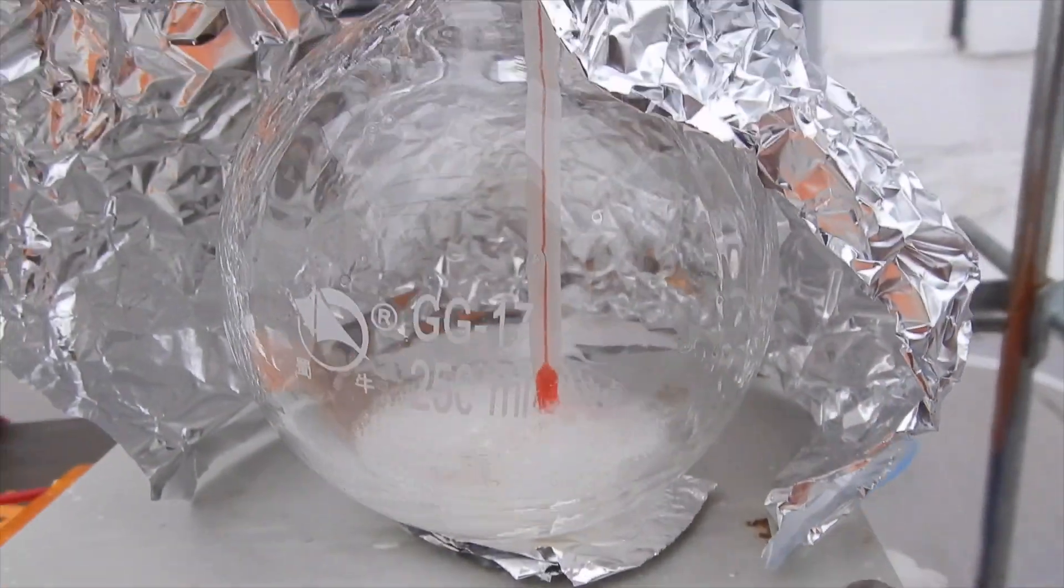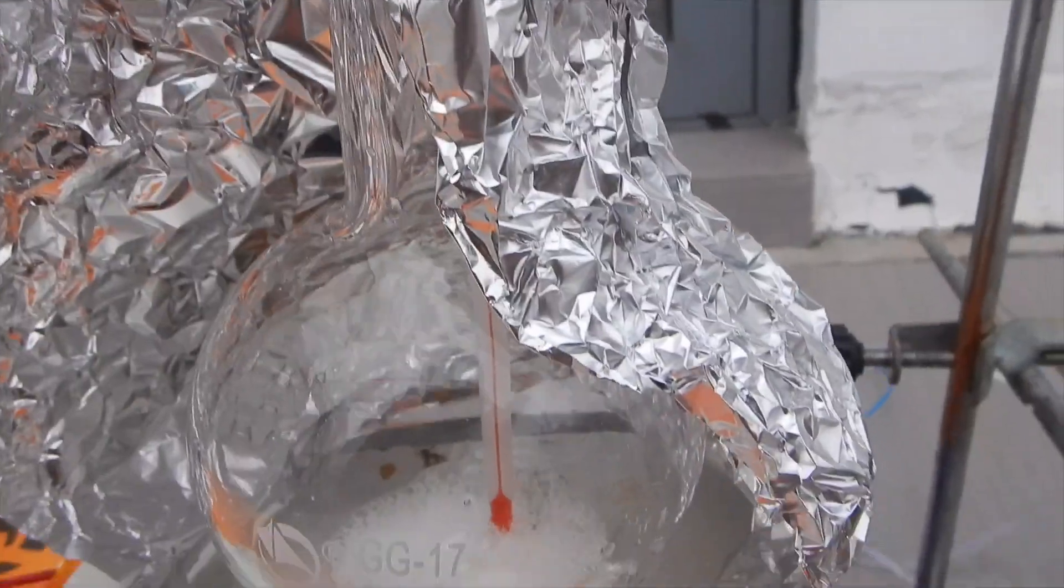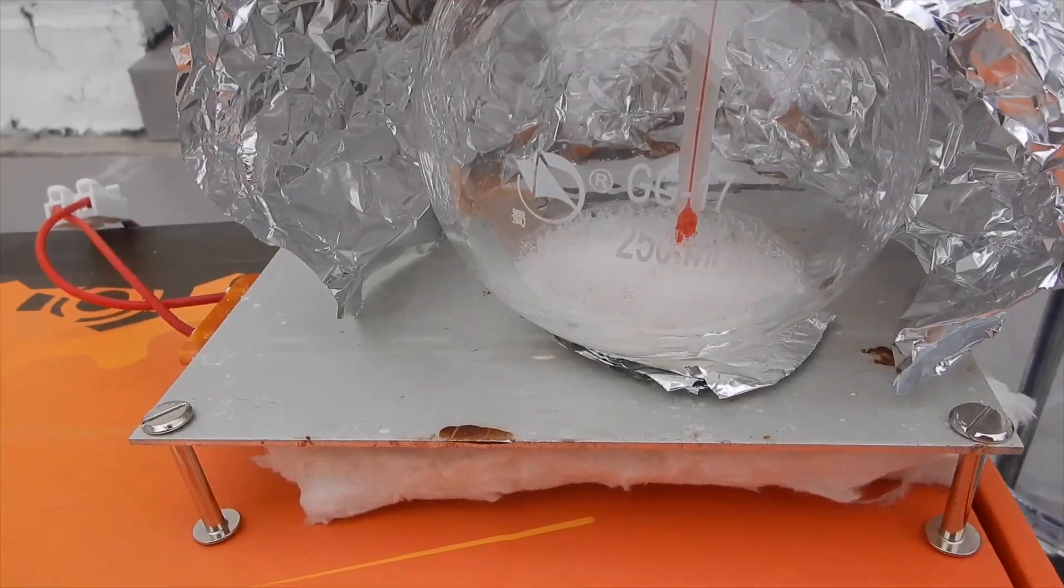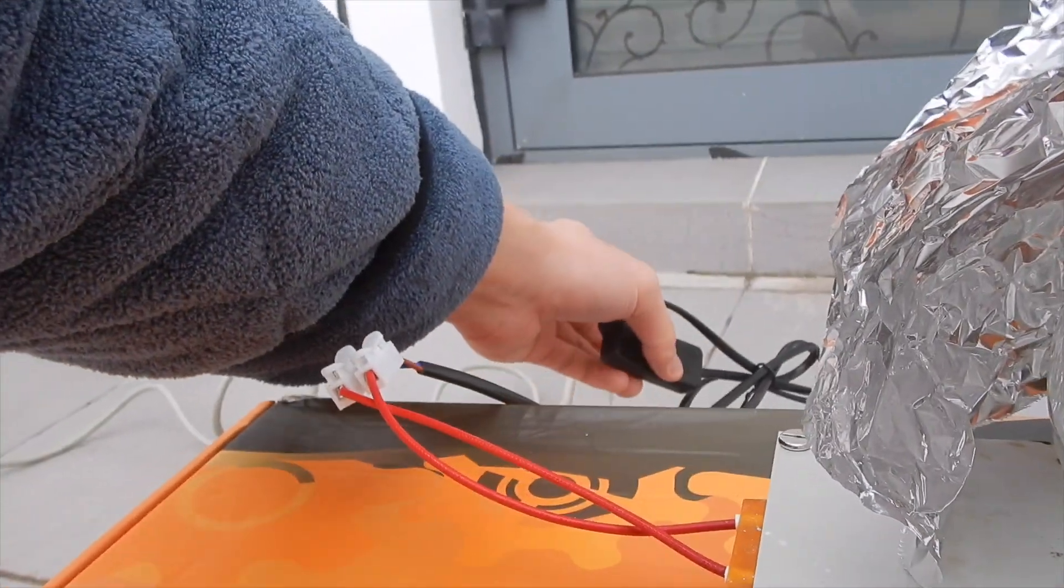I didn't want to continue the distillation, since the ether peroxides, which are not volatile, tend to stay in the residue and possibly explode. Therefore, I turned off the heat and took everything apart.